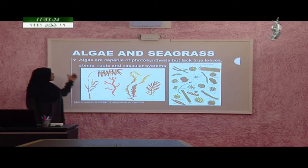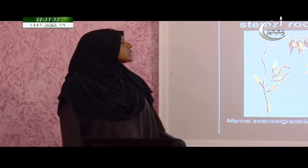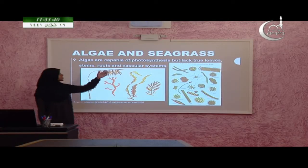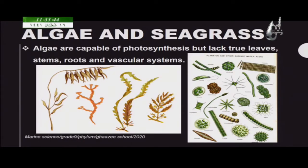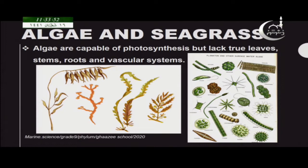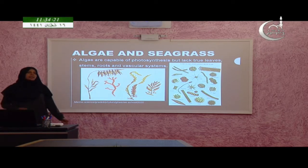Now moving to algae and seagrass. Algae are coming under kingdom Protista — they are not plants. They are capable of photosynthesis but they lack true leaves, stems, roots, and a vascular system. There are many types of algae: red algae, green algae, brown algae, and microscopic algae. There are larger algaes as well.